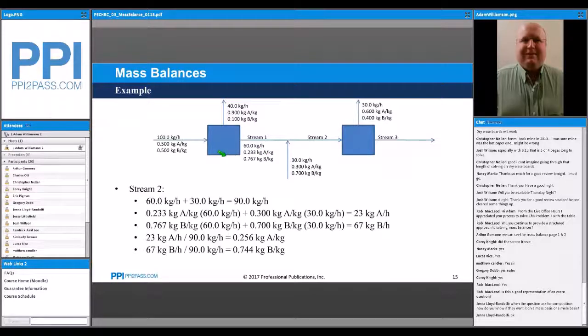Then if you look around the mix point—so here now I've added that information to the diagram. I go around the mix point and now I can do the same thing. In this case I'm going to add the two streams together, so we have 90 kg/hr, 23 kg/hr of A, 67 kg/hr of B, or 25.6% A and 74.4% B.